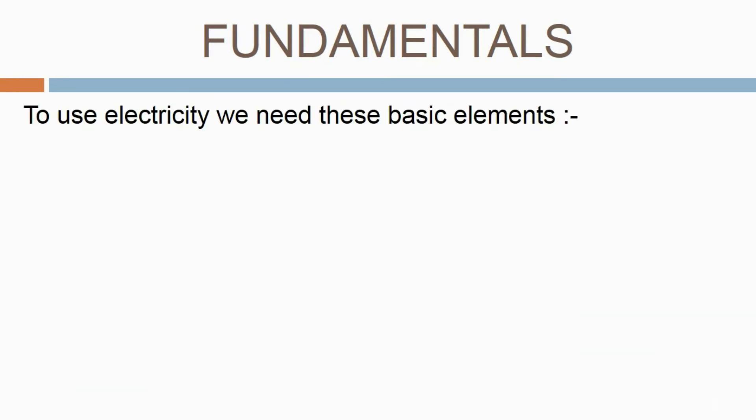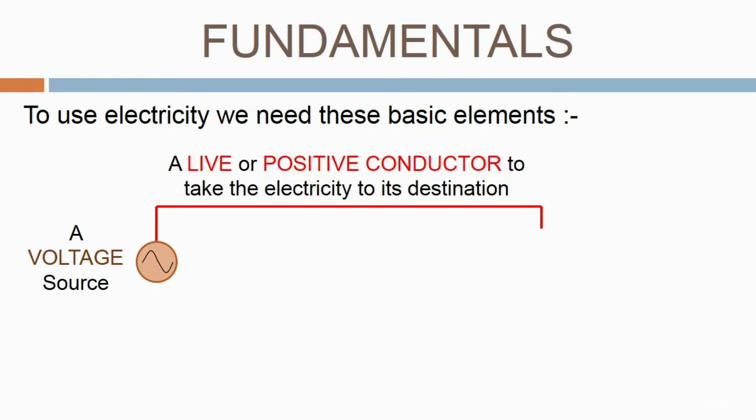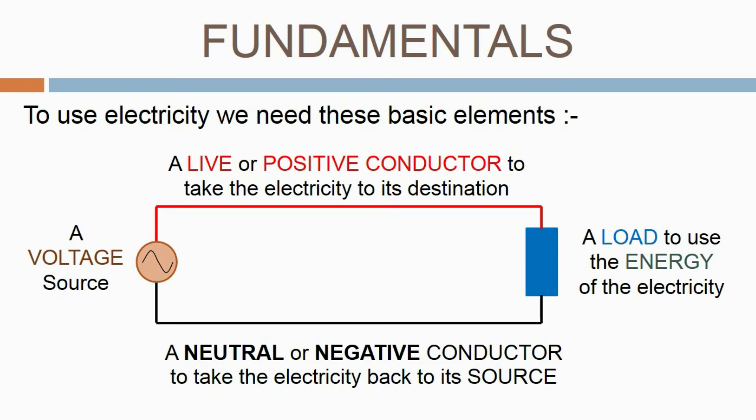To use electricity, we need these basic elements. A voltage source, either AC or DC. A live or positive conductor to take the electricity to its destination. This could be made of copper or aluminium. A load to use the energy of the electricity. This could be a washing machine or a hairdryer. A neutral or negative conductor to take the electricity back to its source. When a full circuit is created, current flows.